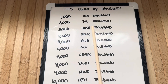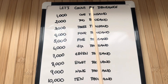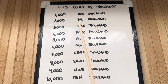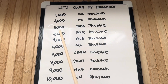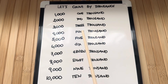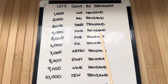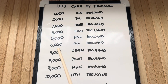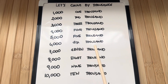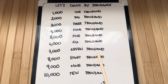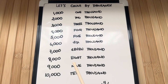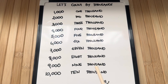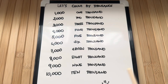Now join me and let's count by thousands. 1,000, 2,000, 3,000, 4,000, 5,000, 6,000, 7,000, 8,000, 9,000, and 10,000.